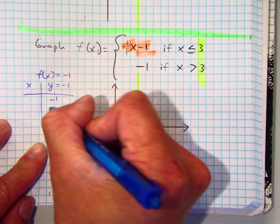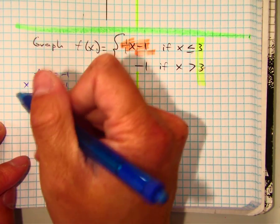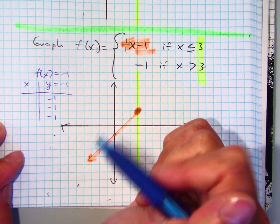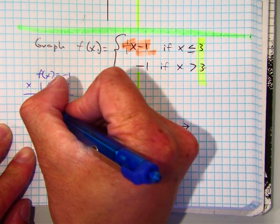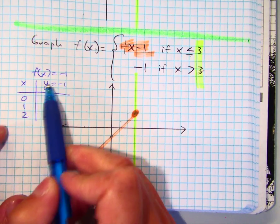It's telling you the answer. They're all negative 1. You have no x values. What can you do? You make them up. We're essentially graphing the line y equals negative 1.